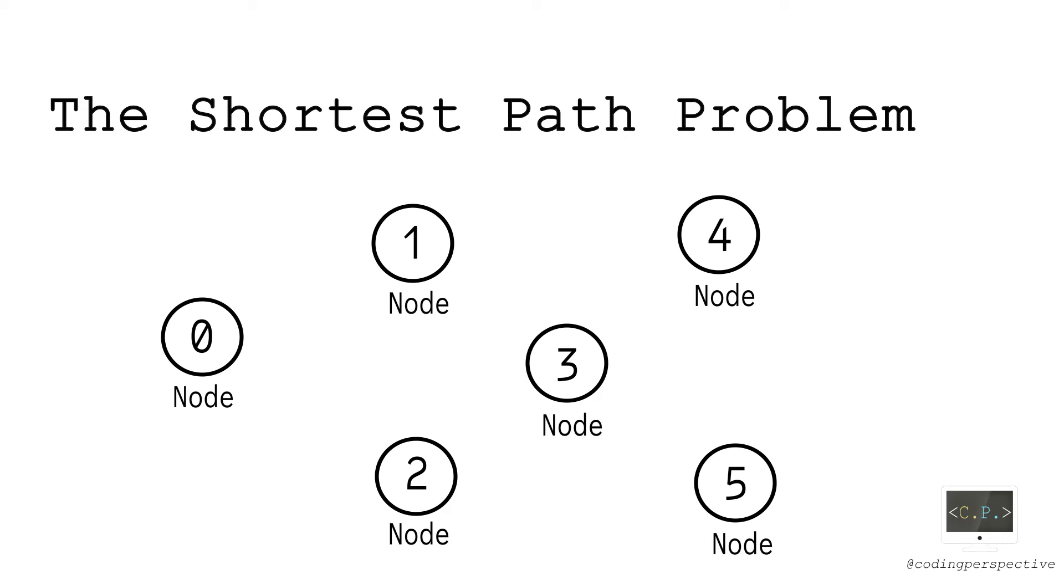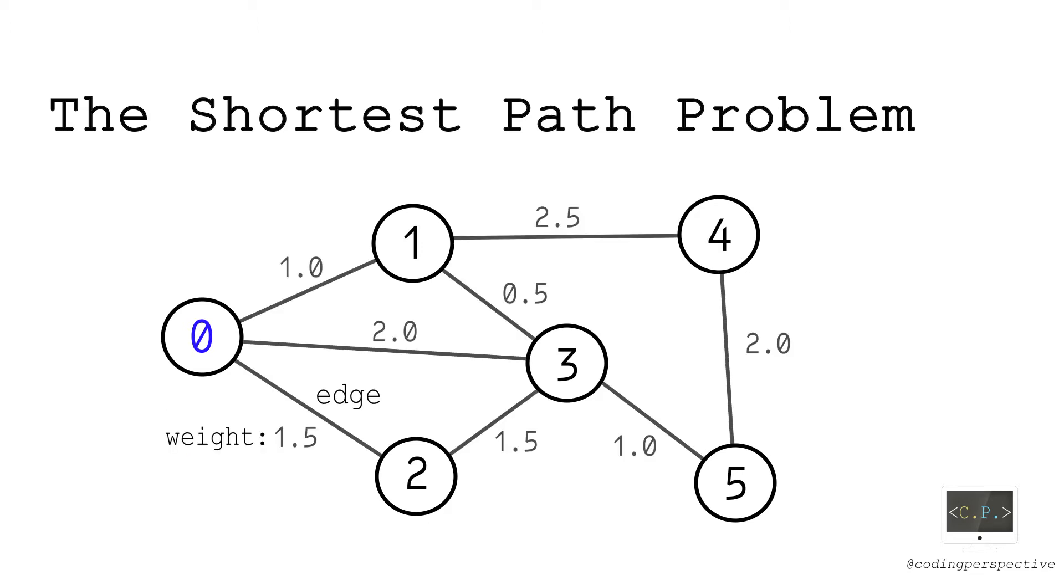To understand the shortest path problem, let's consider a small undirected graph consisting of six nodes where node zero is the source node. Each pair of two different nodes with some weight is called an edge. The weight of an edge can be distance, cost, or capacity depending on the problem. In our problem setting, it is the distance between the nodes of the corresponding pair. Our aim is to find the shortest path from source node to each node where a path is defined as a sequence of nodes.